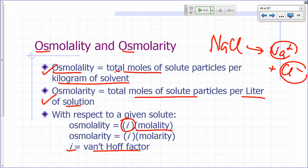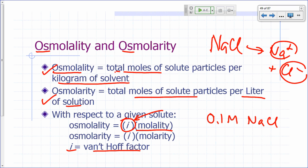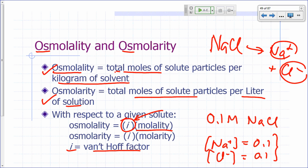For example, in dilute solutions of sodium chloride: if I have 0.1 molar sodium chloride, the concentration of sodium is 0.1 and the concentration of chloride is 0.1, so the total concentration of particles is 0.2. What would I multiply 0.1 by to get 0.2? The Van't Hoff factor i gives you an indication of the extent to which your solute ionizes in water.